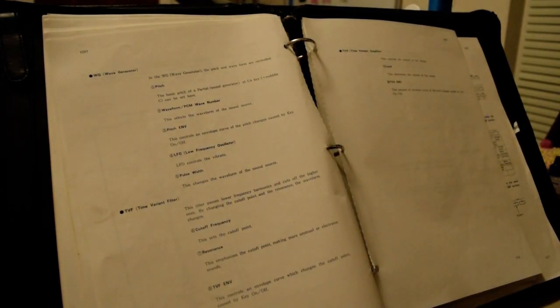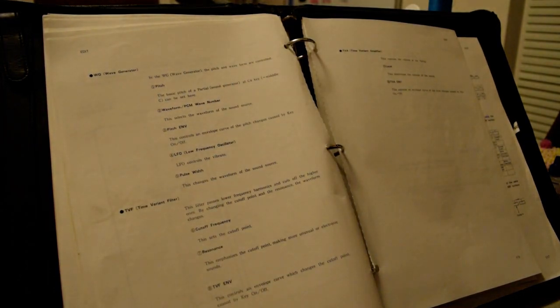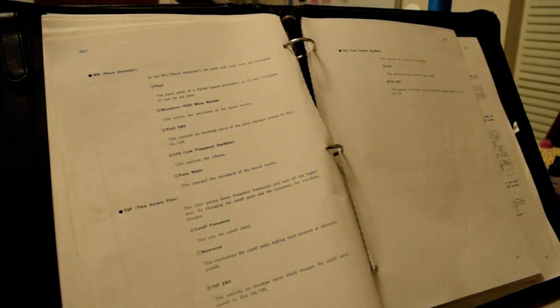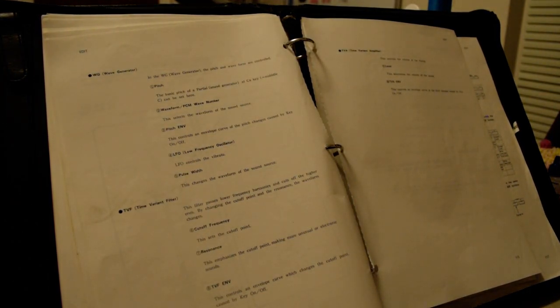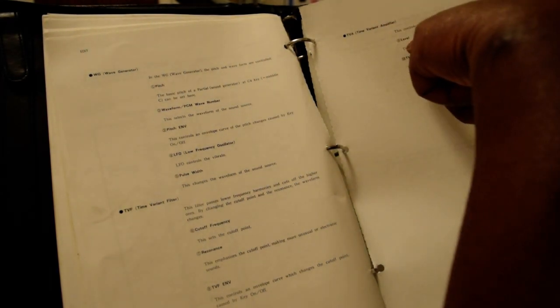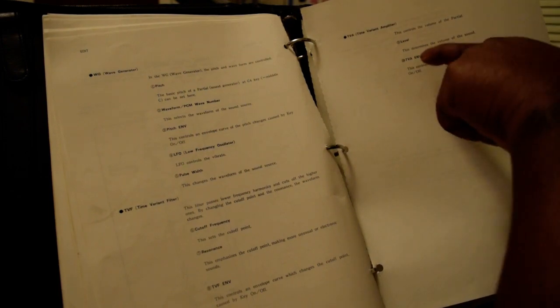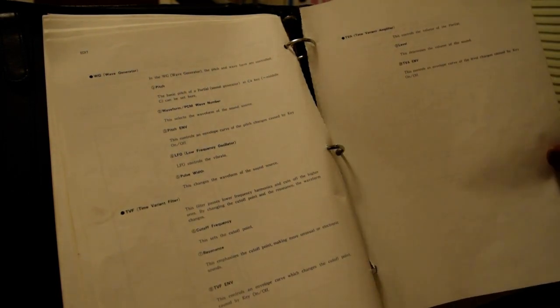And this page is basically talking about the wave generator, TVF, time variant filters. Like the cutoff frequency, this sets off the cutoff point. The resonance: this emphasizes the cutoff point, making more unusual or electronic sounds. The TVF envelope: this controls an envelope curve which changes the cutoff point caused by key on and key off. The TVA, time variant amplifier: this controls the volume of the partial level. This determines the volume of the sound. TVA envelope: this controls an envelope curve of the level caused by key on and off.